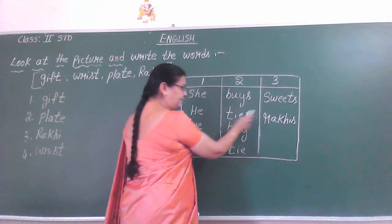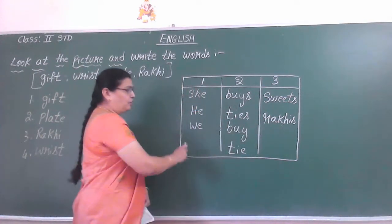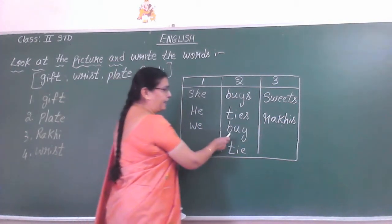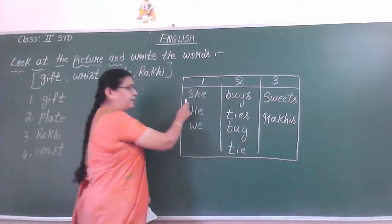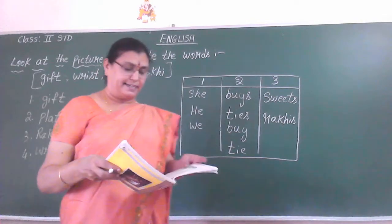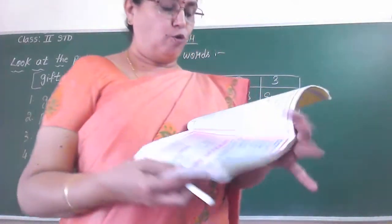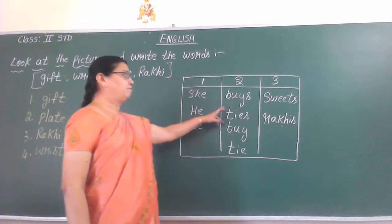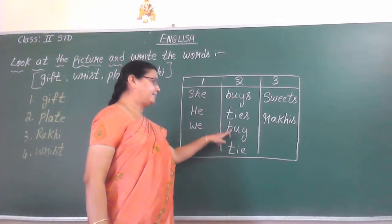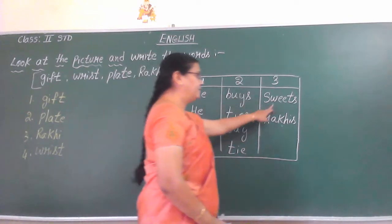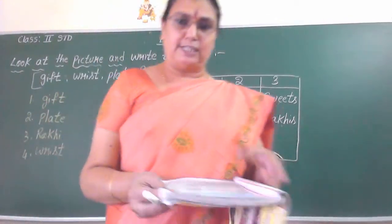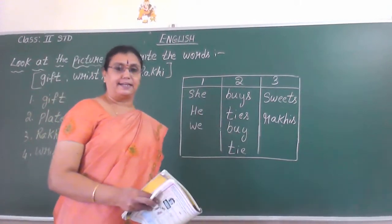He, tight — we, tight. Third one, we can do: he buys sweets. He buys sweets, she buys sweets — like that we can make many sentences. It is your own sentence you can do. By using the words: she, he, we — from the second column: buys, ties, bite, and tight — and the third column: sweets and krap. Those three columns — it is easy, children. By seeing this, you can do many sentences.